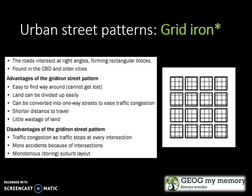Your urban street patterns include the grid iron. This is where the roads intersect at right angles forming rectangular blocks. It is found in the CBD, which is the most important part of the city. Advantages include that it's easy to find your way around, land can be divided up easily, and it can be converted into one-way streets, which decreases traffic congestion. There are shorter distances to travel and little wastage of land. Disadvantages include traffic congestion, more accidents because of the intersections, and it's monotonous.